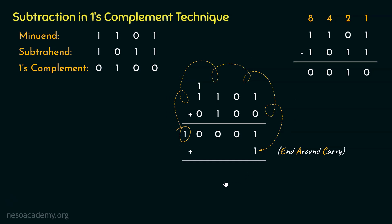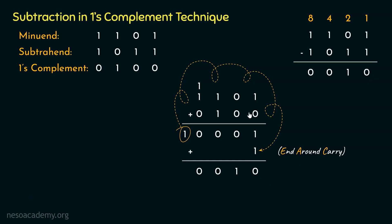Let's perform the addition with the end-around carry. 1 plus 1 gives sum 0 with carry 1, which is then added with the next bit, giving 1. The remaining bits are zeros. The final result is 0010, which is exactly what we expected from the subtraction 1101 minus 1011. That is all about subtraction in one's complement technique — we don't subtract, rather we perform addition using the negative inverse (toggled bits) of the subtrahend.